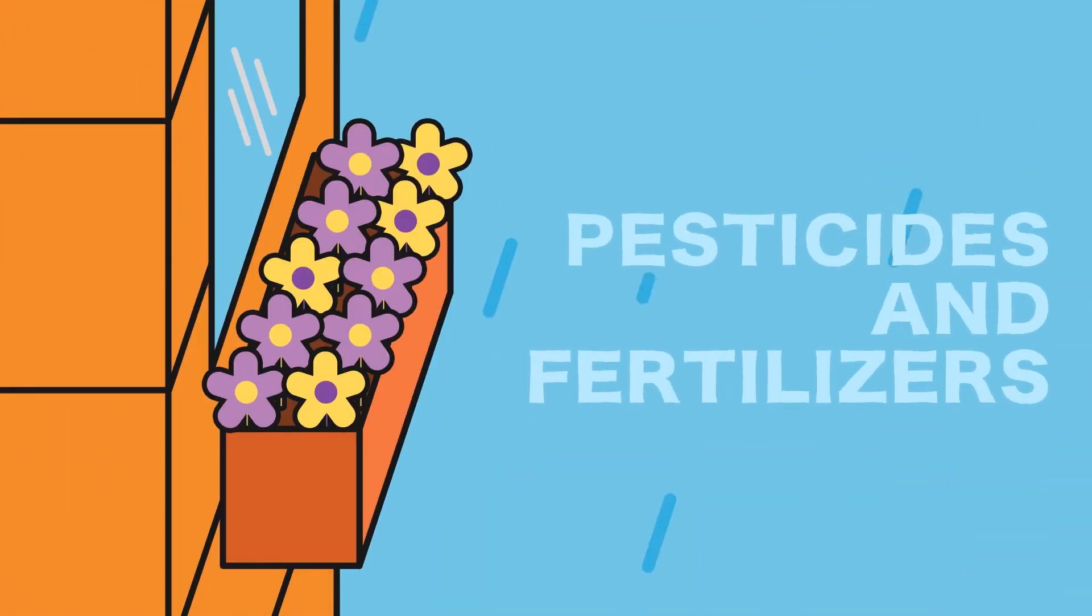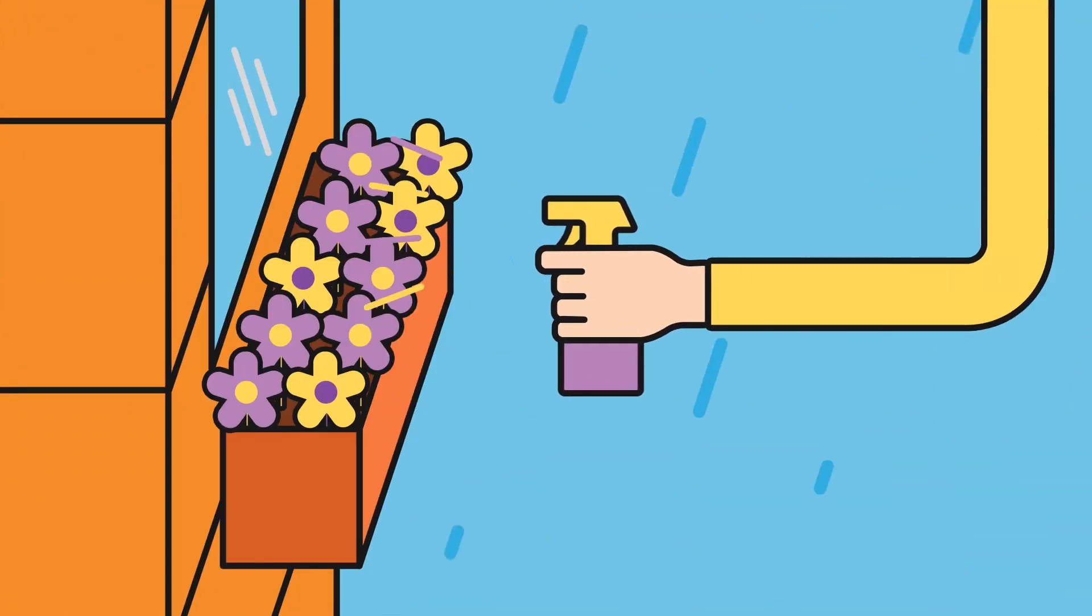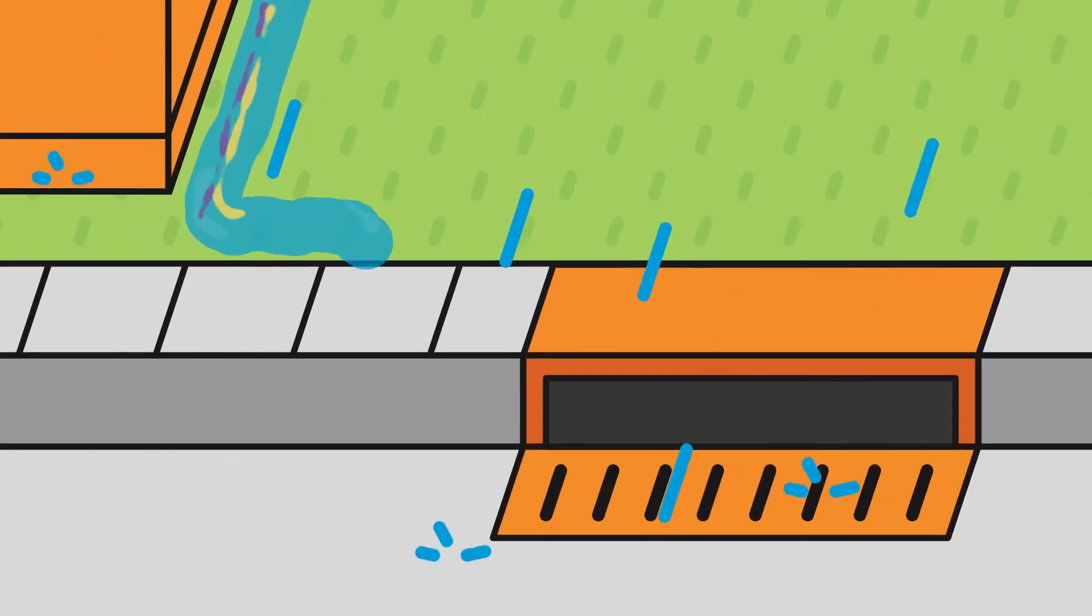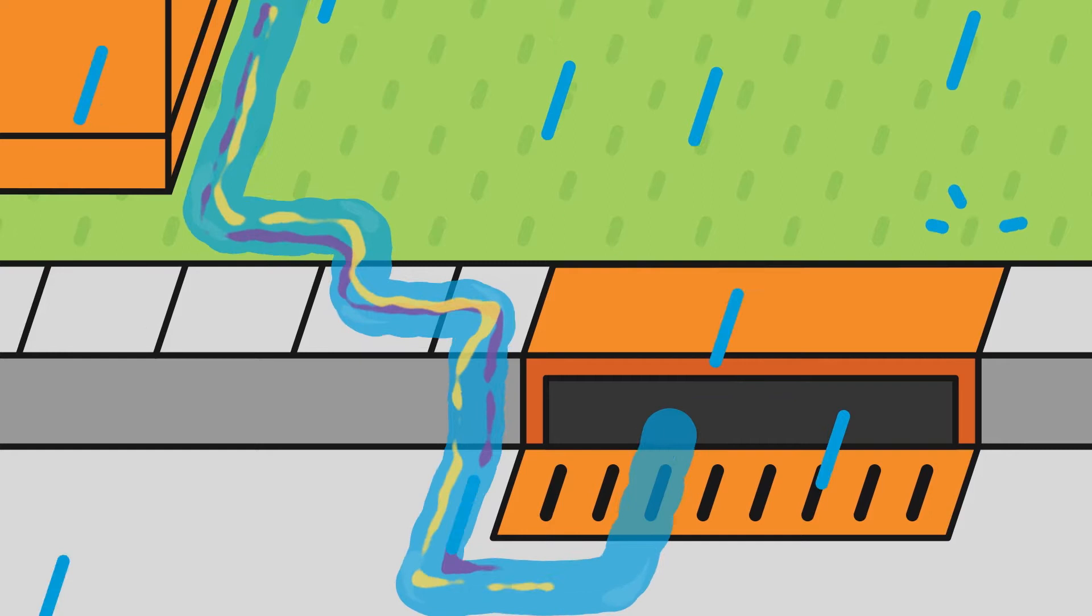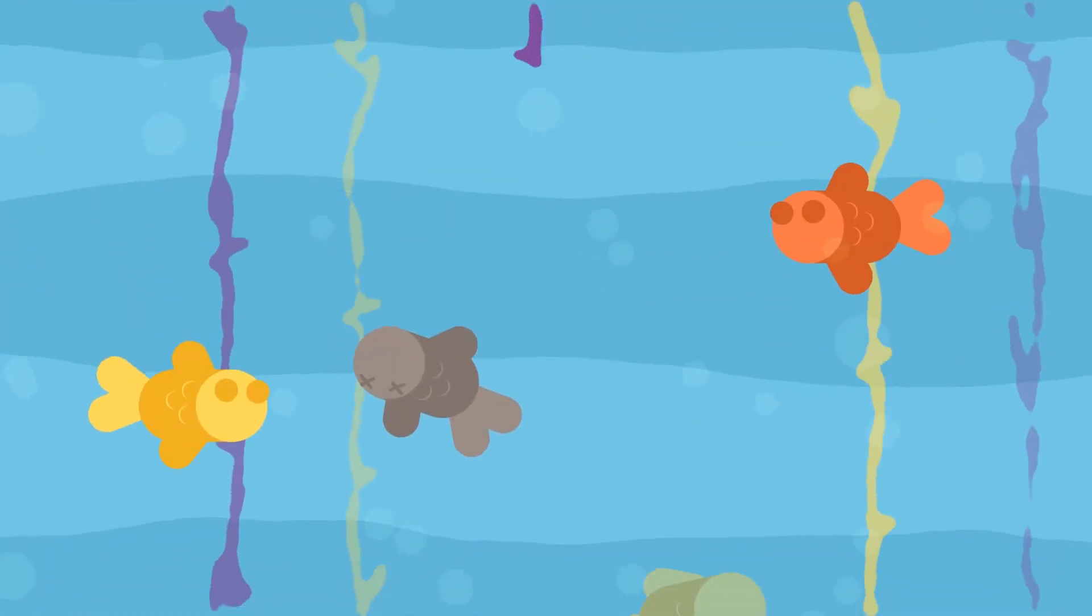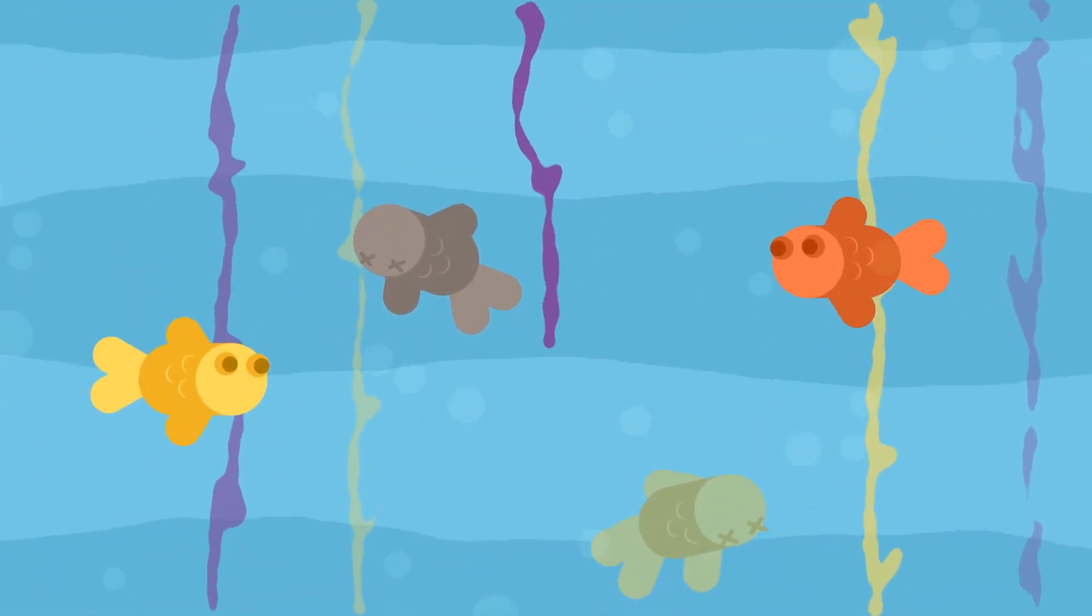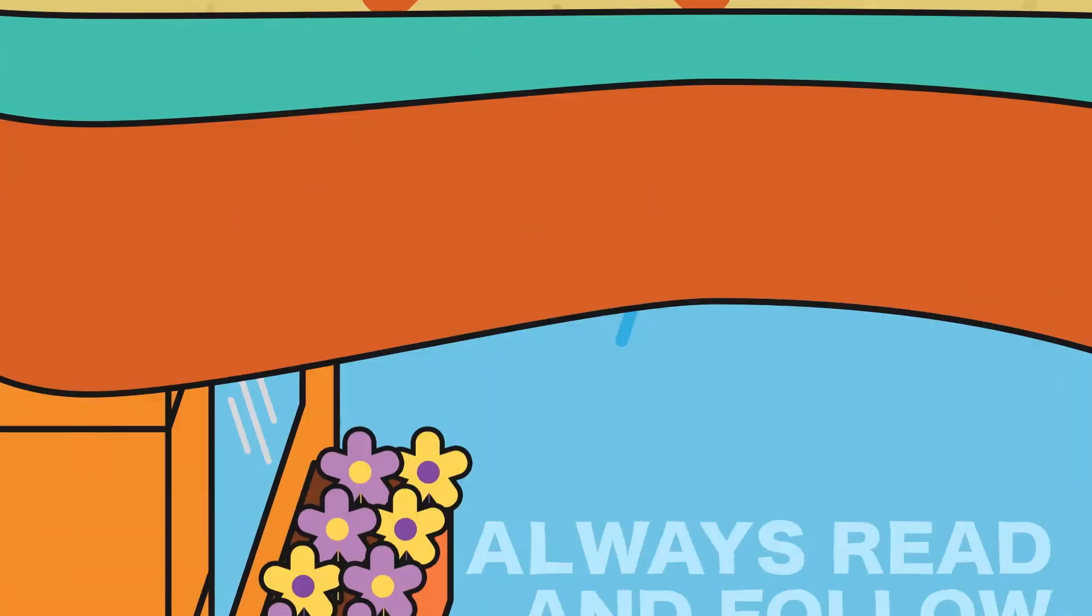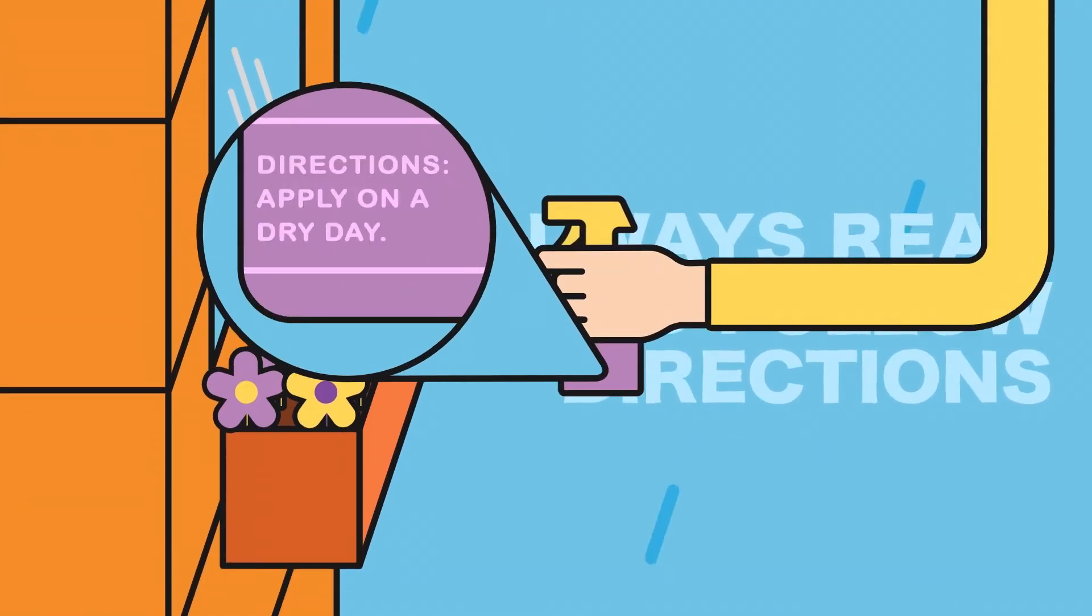Pesticides and fertilizers. Using too much pesticide and fertilizer doesn't help your plants grow and it sure hurts the environment too. These chemicals wash into the storm drains and cause toxic algae to build up and kill fish. Always read and follow the directions carefully.